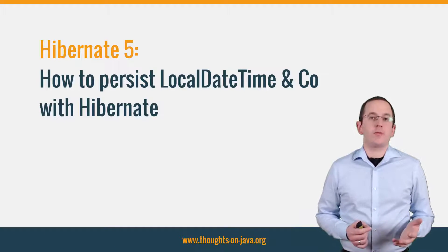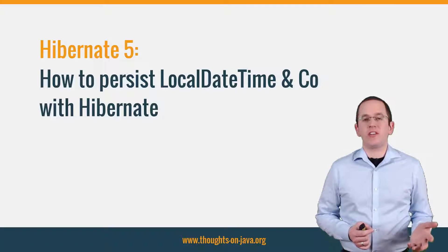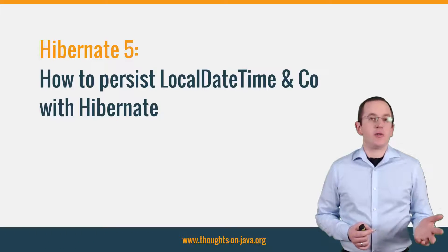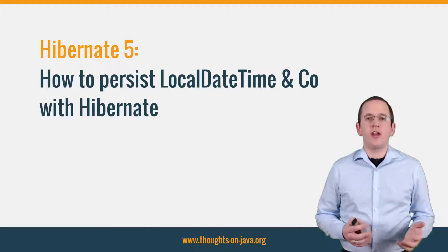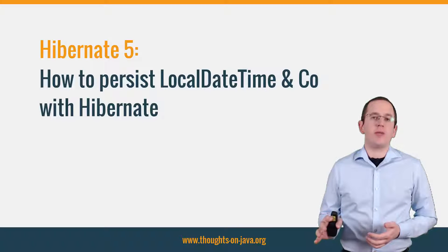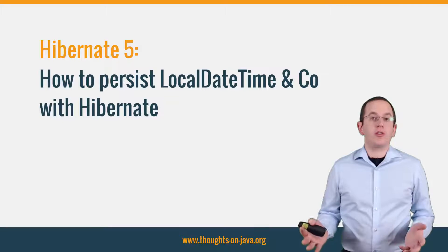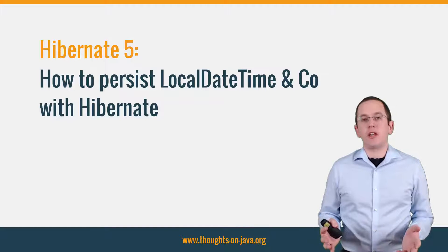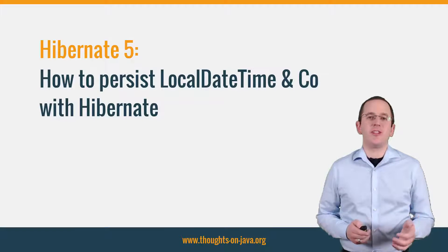You have 2 options if you want to use the correct JDBC types when you persist these classes. You can implement a JPA Attribute Converter, as I showed you in one of the previous videos, or you can use the Hibernate-specific Java 8 support, which was introduced with Hibernate 5. This approach is not portable to other JPA implementations, but much easier to use, as I will show you in this video.